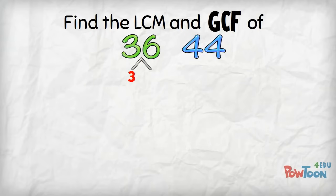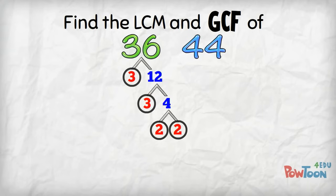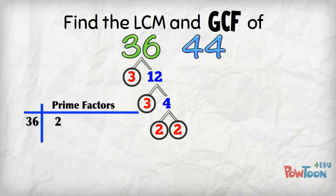36 is from 3 times 12. 12 is from 3 times 4, and 4 is from 2 times 2. Then list the prime factors in a table: 2 × 2 × 3 × 3.